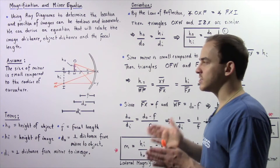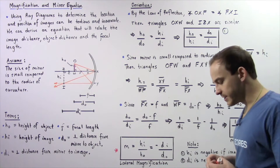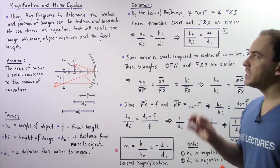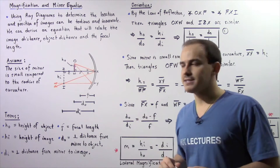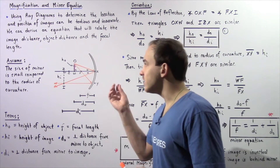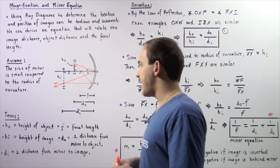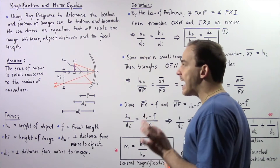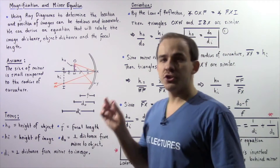These quantities will help us determine the position and location of our image. Let's begin by making the following assumption: the size of our concave mirror is small relative to the radius of curvature. We want to use light rays to derive the mirror equation as well as something known as magnification. We begin by supposing we have a concave mirror with its axis shown by the following line, and we essentially begin with two light rays.